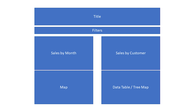Looking at the layout, it's very vertical in orientation. We could do a column of sales by month over map, and then sales by customer over data table and tree map. Or we could do a horizontal row — sales by month and sales by customer — and then below that, map and data table/tree map. I'm going to go horizontal, putting both sales boxes on the same row, then map and data table/tree map on the same row. The data table and tree map have to be in a vertical container so they can swap. Now let's look at the dashboard again.